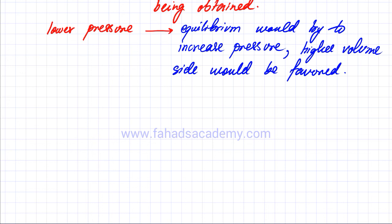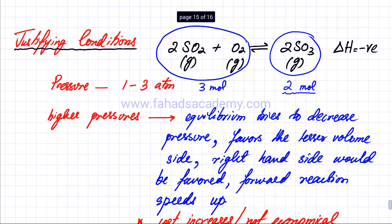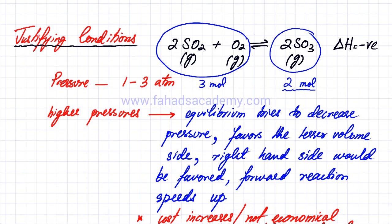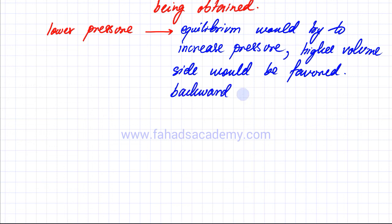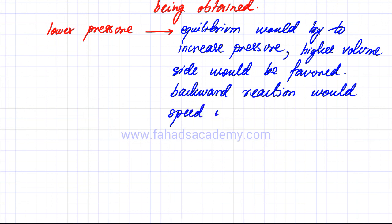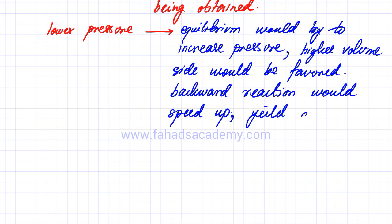The higher volume side is your left-hand side, which has three moles. So the higher volume side — the left-hand side — would be favoured. That means the backward reaction would speed up. And since the backward reaction is speeding up, your yield is going to obviously decrease.